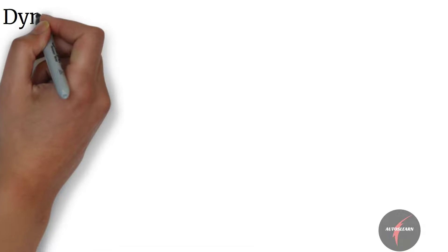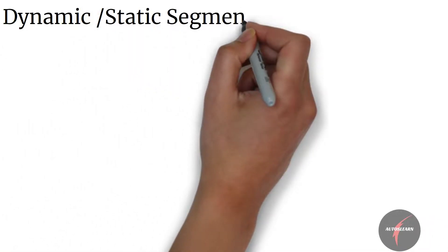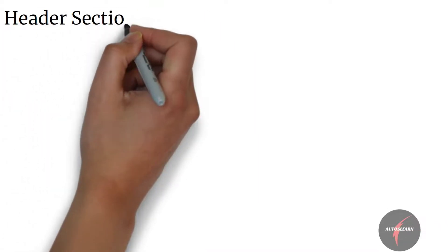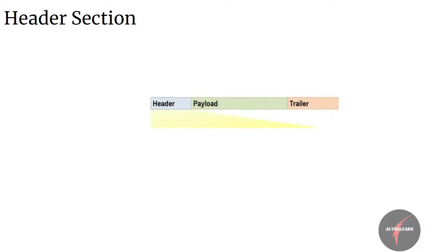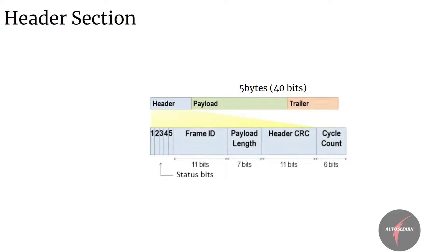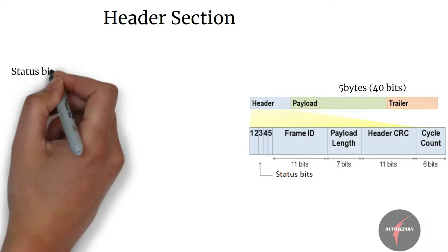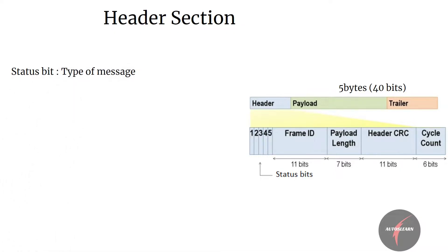Now that we have covered dynamic and static segments, let's look into the frame associated with each of these segments. Frames used in these segments have three sections: header, payload, and trailer. The header section is 5 bytes, that's 40 bits long, and includes the following fields: status bits of 5 bits, frame ID of 11 bits, payload length of 7 bits, header CRC of 11 bits, and at last cycle count of 6 bits. Status bits are used to specify a message more precisely.